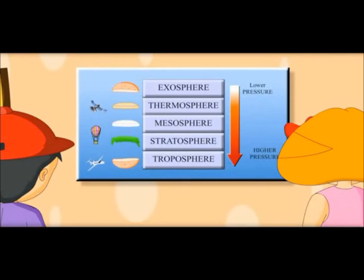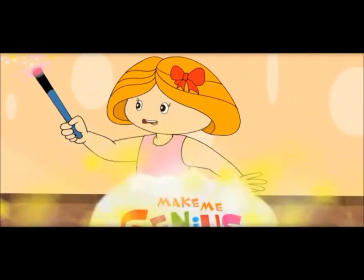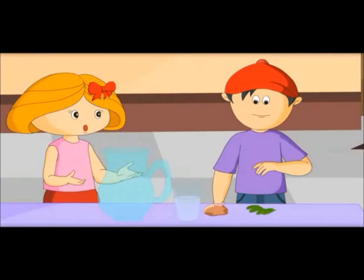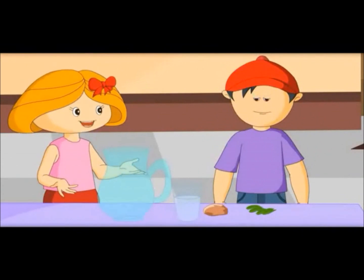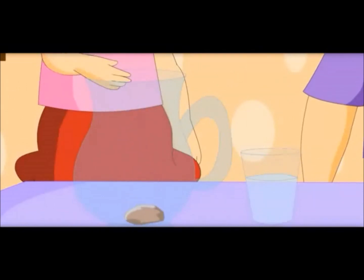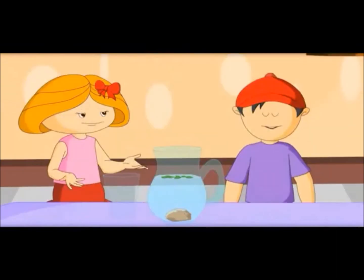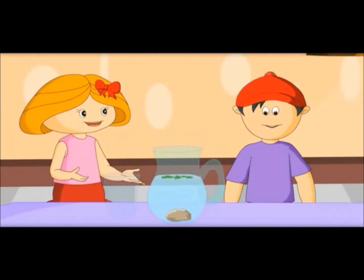Why does light air go up and heavy air come down? We will see this with an experiment. It shows that heavier things settle down. Let me put all things in this jug — the stone would settle down as it is heaviest. Let me put the water and tea in this jug. Now you know why heavy air settles in the bottom layer and light air goes up.